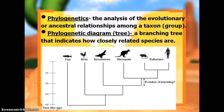Phylogenetics is the analysis of the evolutionary or ancestral relationships among a group. So we're looking at a group that we have already classified, that they fit together based on form and structure, and now we're going to look at their history or their ancestry and put them together.